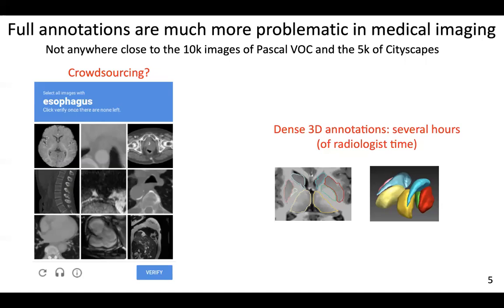Even if you go to other important application domains like medical image analysis, full annotations are even much more problematic. We take examples in different applications where we are not anywhere close to the 10K images in Pascal VOC or the 5K images in Cityscapes for natural images. Also keep in mind, you cannot give this annotation task to everybody — you need an expert, a doctor or a radiologist, to label these images. You cannot do crowdsourcing for this type of labeling task. On top of that, you might be dealing with 3D data or 3D-plus-time data, so the labeling task might take an expert a few hours.